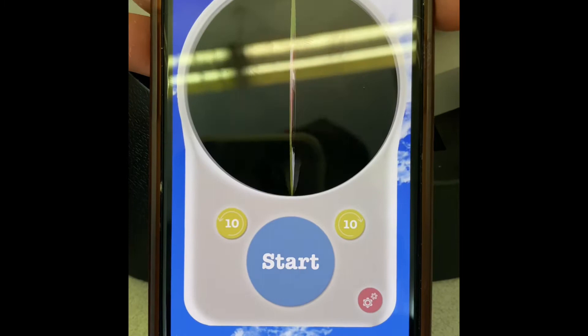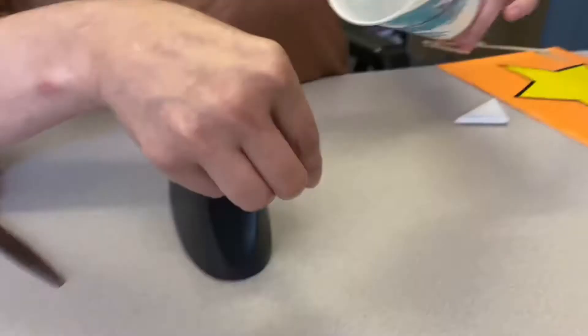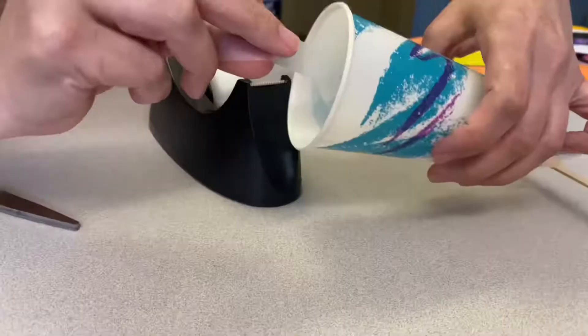Now that our glue is dry, it's time to finish our assembly. We're going to take a piece of tape. We're going to insert that bottom stick into the hole we made in our cup and we're going to secure it with the piece of tape inside the cup.